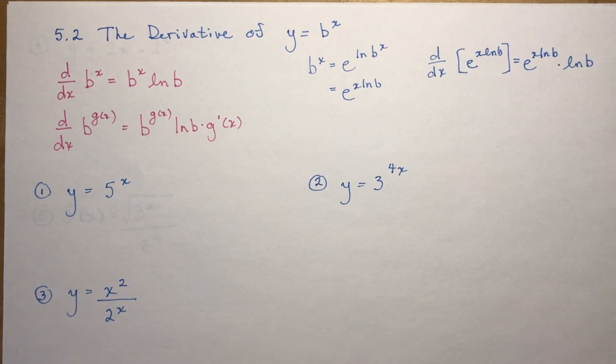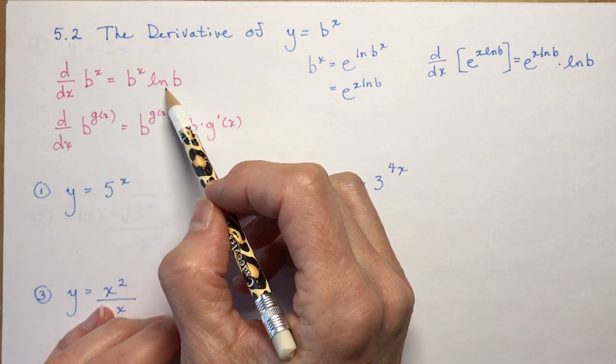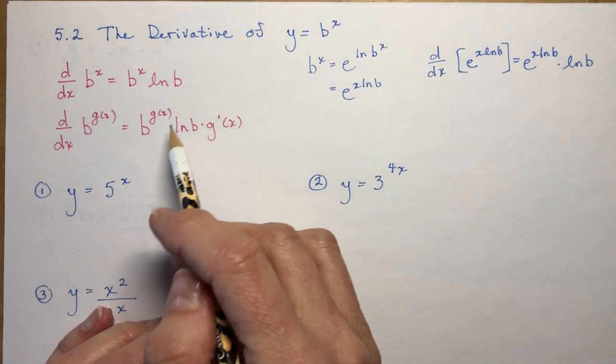The derivative of e to the x was simply e to the x, but b to the x is just a little bit different. In your textbook, you would have gone over finding the constant of proportionality. In that exercise, you were finding the actual slope of the function, say 2 to the x when x is minus 2, and then you divided that derivative by the value of the function at minus 2, and you found out that the numbers were all the same. For 2 to the x, you would have found it was about 0.693, which happens to be the ln of 2.